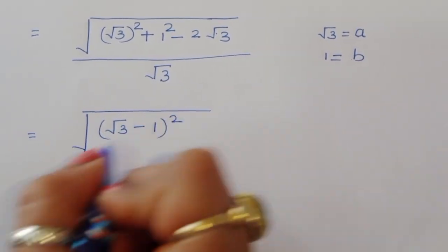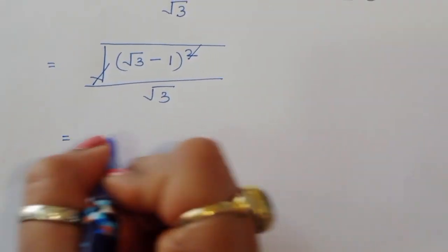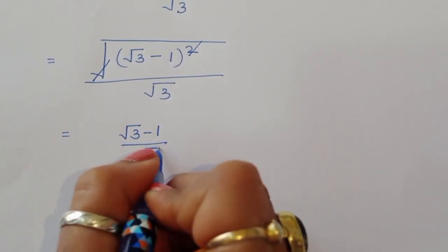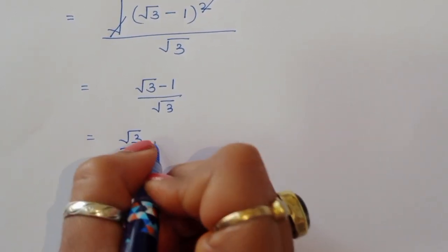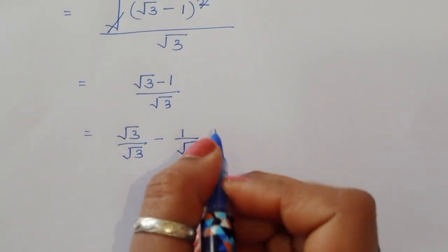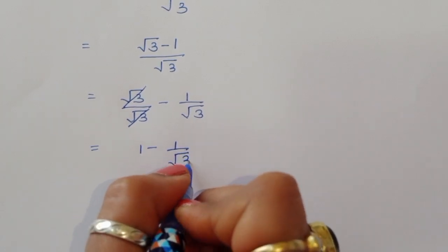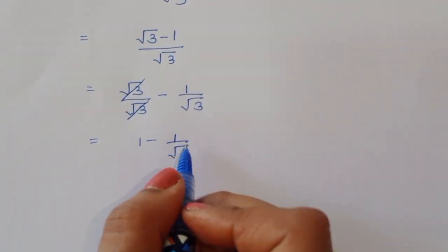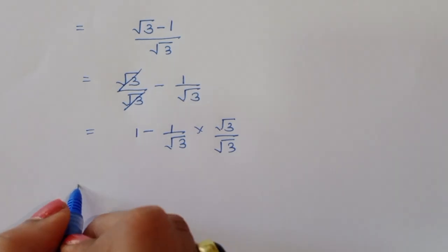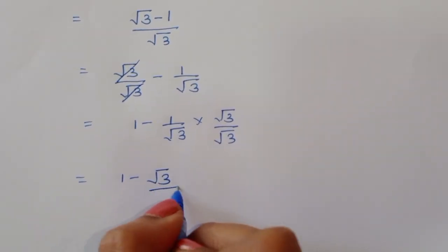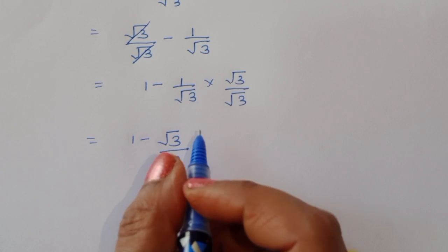So we have square root of (square root of 3 minus 1)² divided by square root of 3. The square and square root cancel, leaving (square root of 3 minus 1) divided by square root of 3. Separating the terms: square root of 3 divided by square root of 3 minus 1 divided by square root of 3, which gives 1 minus 1/square root of 3. Multiplying numerator and denominator by square root of 3 gives (square root of 3 minus 1) divided by... wait — we get 1 minus square root of 3 divided by 3.